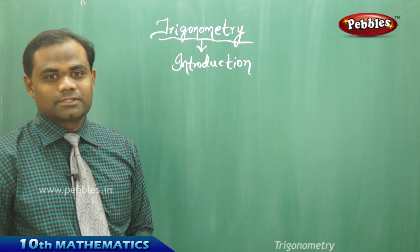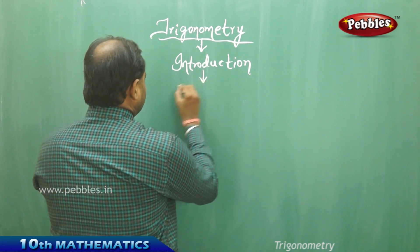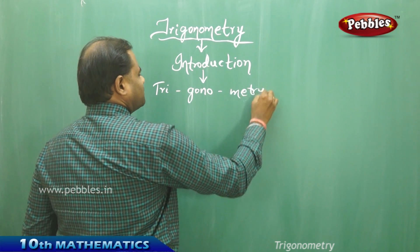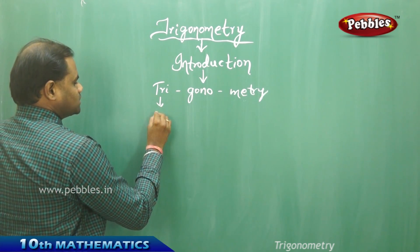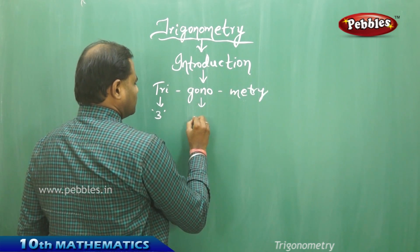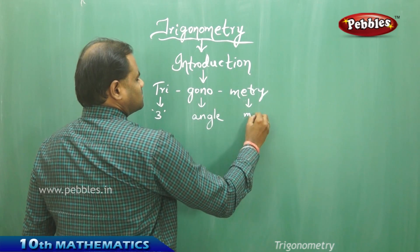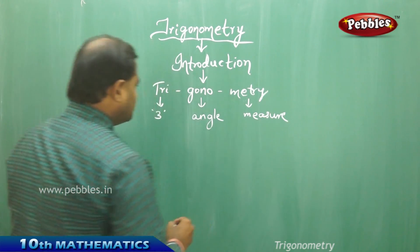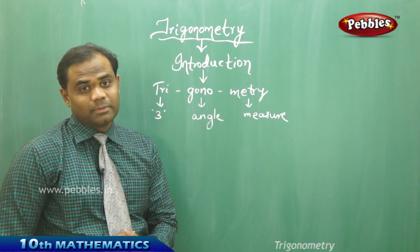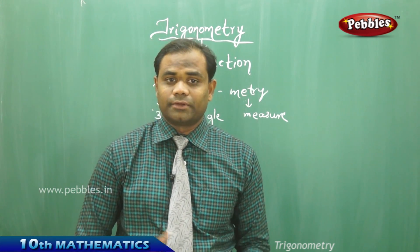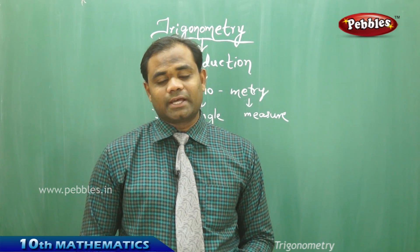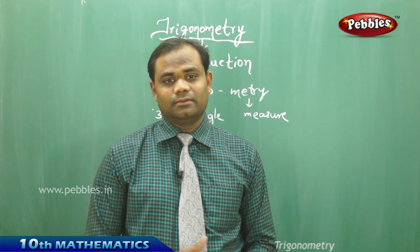Trigonometry has been derived from three different words. Tri means three, which refers to a three-sided figure — a triangle. Gono means angle and metric means measure. So these three basic words split out of Trigonometry have their own individual meanings: tri is three, gono is angle, and metric is measure. Therefore, the measure of three angles of a triangle is called Trigonometry.